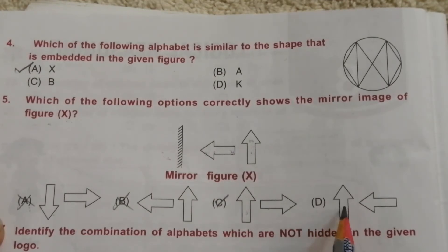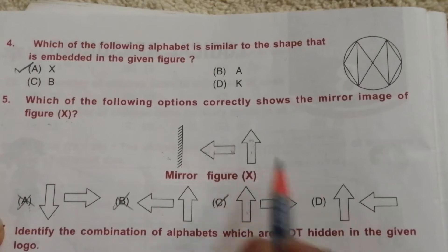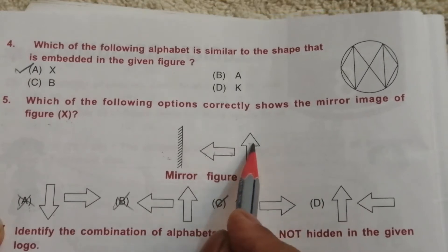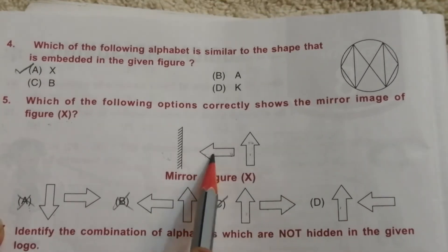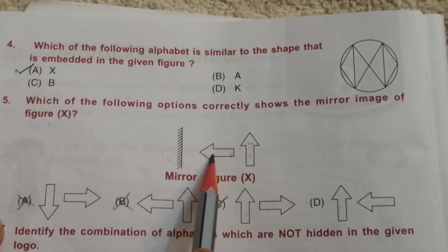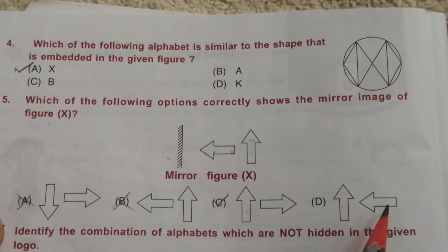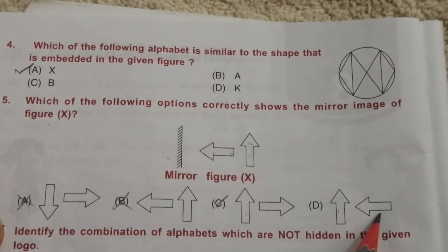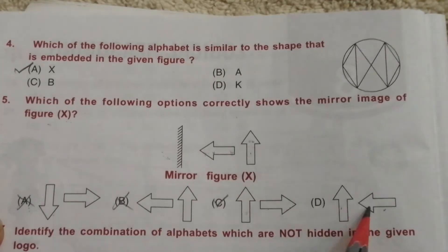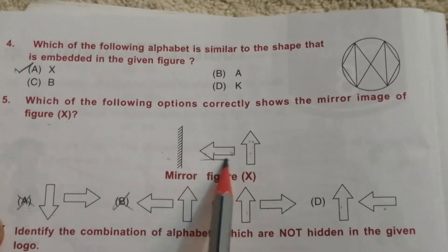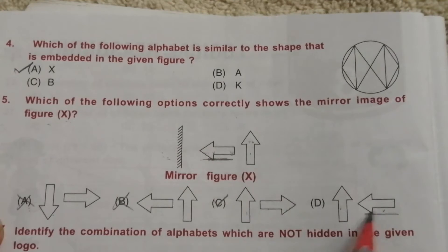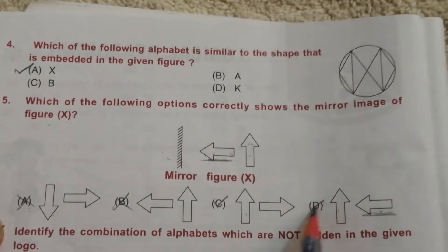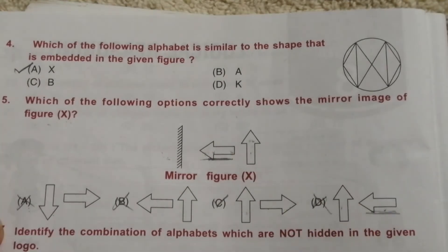Checking option C: right comes to left and left goes to right, and this interchange is correct — so this is the correct answer. Checking option D: right comes to left and left goes to right, but this is not interchanged correctly. So D is not the correct answer. The answer is C.